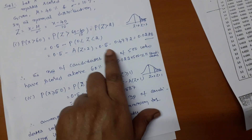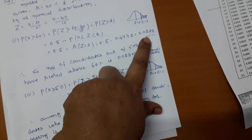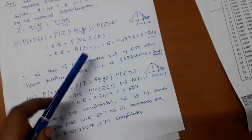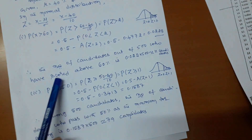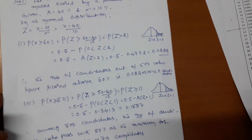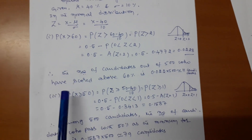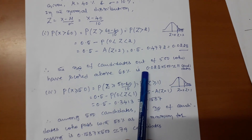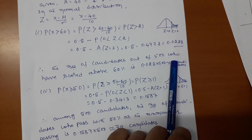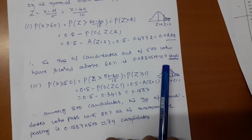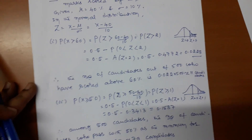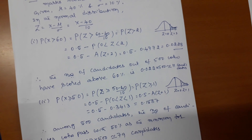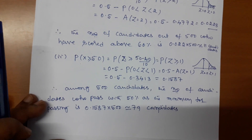So P(Z > 2) = 0.5 − 0.4772 = 0.0228. They are asking how many students scored above 60%, so we multiply this value by 500 candidates. Approximately we get 11 candidates.